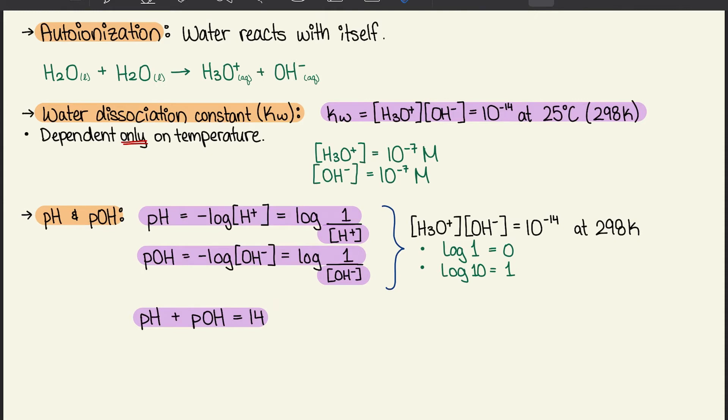We do the same thing for pOH, but instead we use hydroxide ions. When we add both pH and pOH together, we should get 14. Good things to keep in mind are that the log of 1 equals 0 and the log of 10 equals 1.